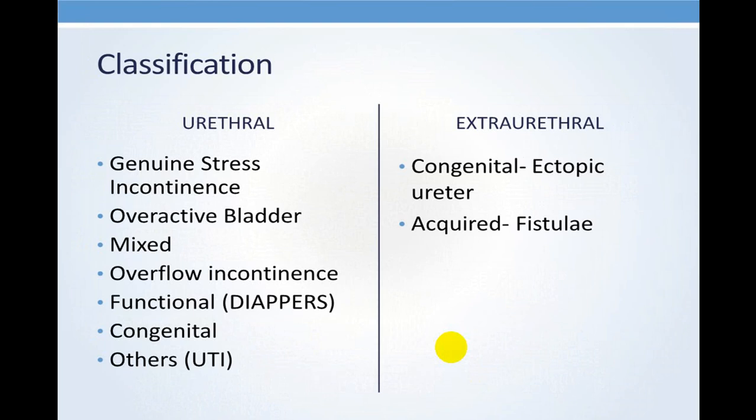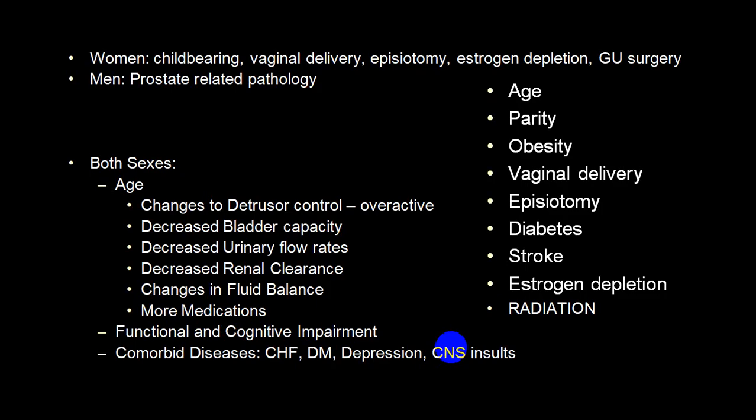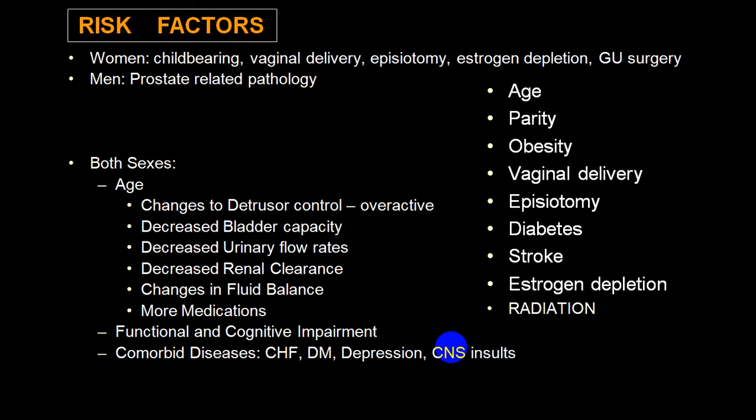Causes can be classified into two broad groups: urethral and extra-urethral. Risk factors include changes in detrusor muscle control like overactive bladder or decreased bladder capacity, decreased urinary flow rates, decreased renal clearance, changes in fluid balance, certain medications, comorbid conditions like congestive heart failure, diabetes, depression, CNS damage, obesity, vaginal delivery, episiotomy, diabetes, stroke, estrogen depletion, and radiation.